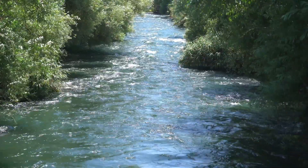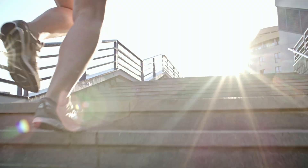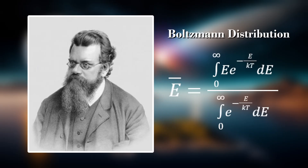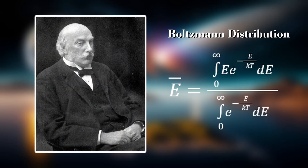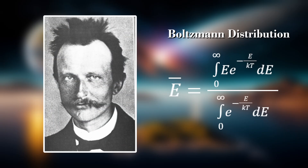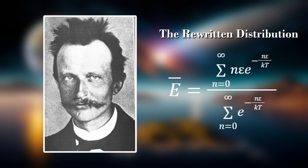Planck proposed that rather than energy being absorbed and emitted continuously, it was only able to be absorbed and emitted in discrete packets, or quanta. By using this assumption, he was able to rewrite the Boltzmann distribution, which is a formula that represents the average energy in a system. Taking a classical mechanical approach to thermal radiation meant using a ratio of integrals to represent a continuous stream of energy via the Boltzmann distribution — which is exactly what Lord Rayleigh did when deriving his formula. Using the distribution this way results in the average energy of a system being equal to the Boltzmann constant multiplied by the temperature of the system. But Planck, using his idea of discrete packets, rewrote this distribution, changing the integrals to sums of series in order to represent these discrete packets of energy in an energy distribution.